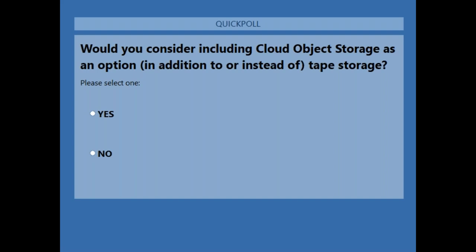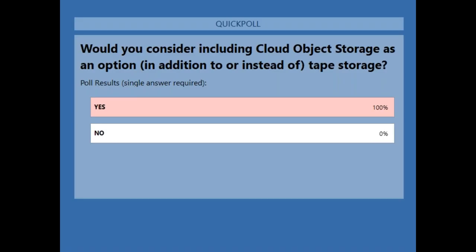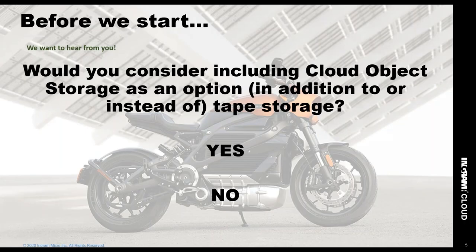Our next question: would you consider including cloud object storage from IBM as an option in addition to, or instead of, tape storage? We've had that question even this week — let's have a look at what tape would cost to refresh for long-term container backup compared to cloud object storage. The result: 100% would include it as an option, which shows we've got a lot of forward thinkers on this webinar — and that's something we'll try to accelerate today, keeping with the Harley-Davidson theme.